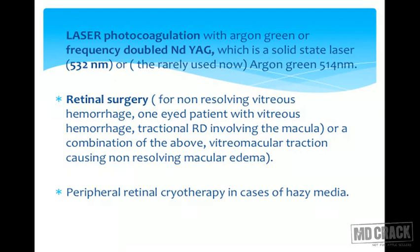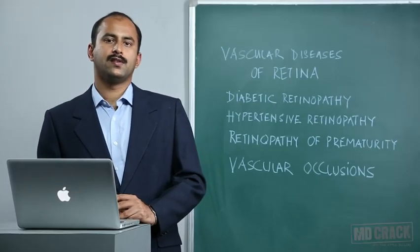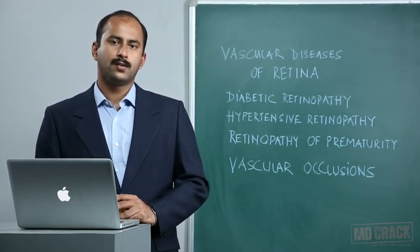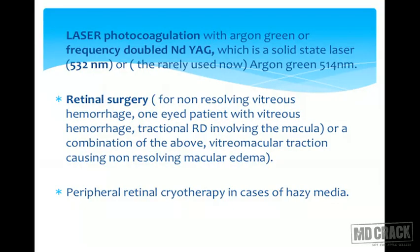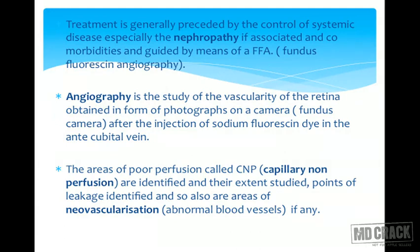Laser photocoagulation with argon green laser or frequency-doubled neodymium YAG laser at 532 nanometers has been the gold standard for diabetic retinopathy treatment. Argon green laser at 514 nanometers is rarely used now as it is a gas laser with maintenance problems. Retinal surgery is used for non-resolving vitreous hemorrhage, one-eyed patients with vitreous hemorrhage, tractional retinal detachment involving the macula, or a combination. It is also used for vitreomacular traction causing non-resolving macular edema. If media is hazy, peripheral retinal cryotherapy is an option, though infrequently used due to advances in vitreoretinal surgery.